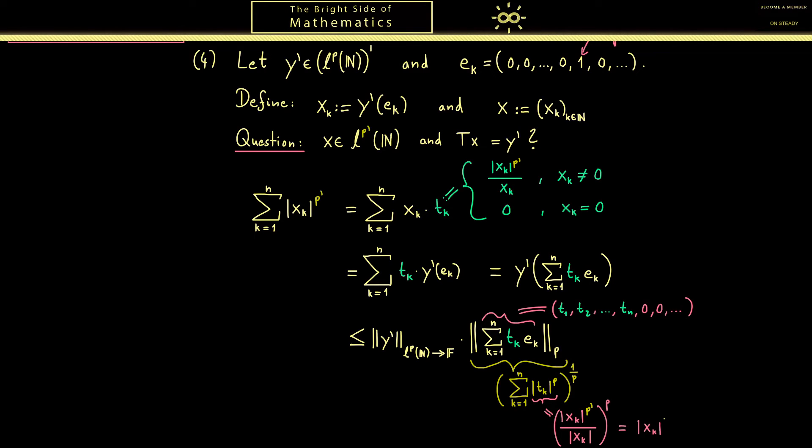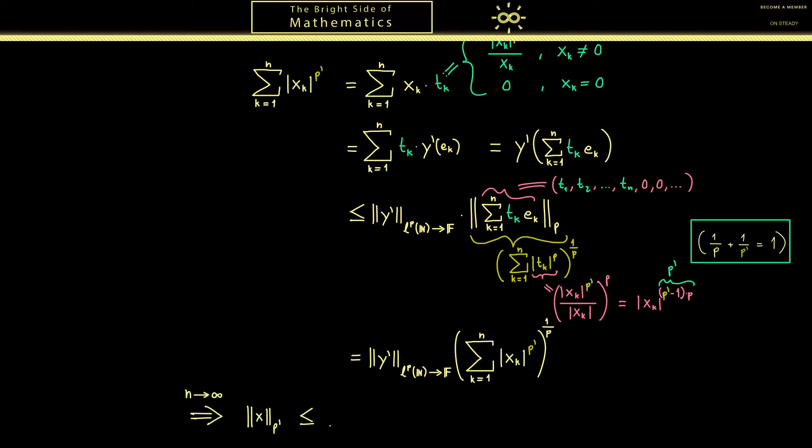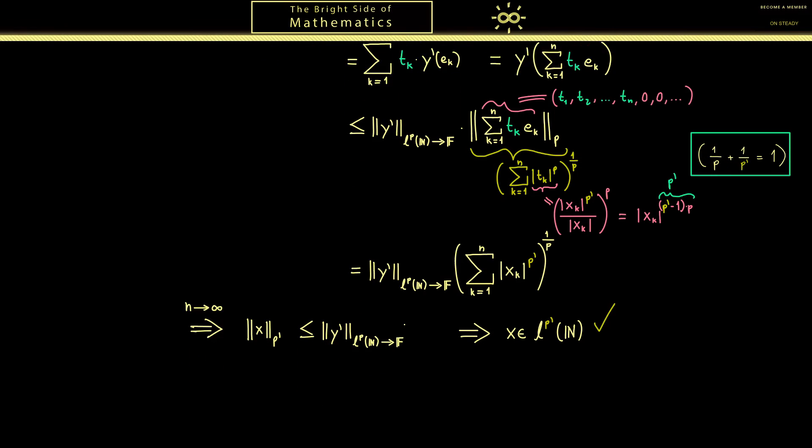This means that we have here xk to the power p' minus 1 times p. Now by using the definition of the Hölder conjugate here we see this one is simply p' again. Now let's put everything together and you see it looks much easier now. We still have the operator norm of y' but here we have the same sum as on the left hand side just to the power 1 over p. Therefore and maybe you recognize the trick we can just divide by this term here and use the definition of the Hölder conjugate again because then we get just the p' norm on the left hand side. And it will be the p' norm of the vector x if we send n to infinity. So in summary we have that the p' norm of x is less or equal than the operator norm of y'. With this you should see we have answered the first question our vector x lies indeed in Lp'.